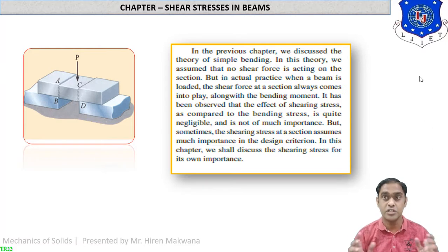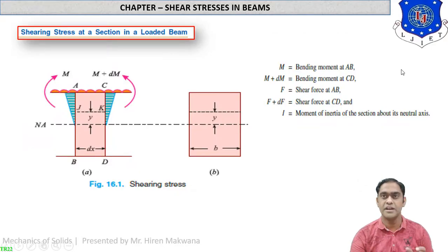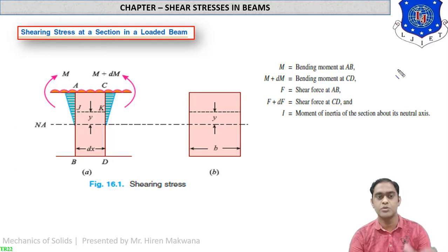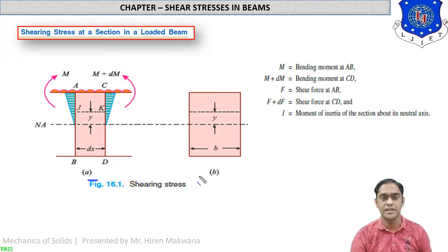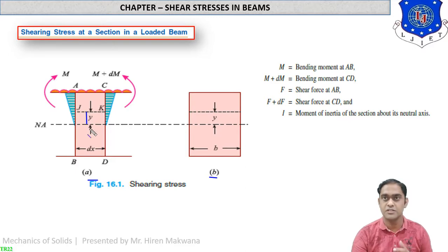Let us see one important theory to derive the equation of shear stress acting on a beam. This is our main and fundamental theory of shearing stress at a section in a loaded beam. You can see two sections — this is the front view and this is the side view in figure b. This is the neutral axis, meaning the centroid axis passing through the CG of the beam. The layer JK is at a vertical distance y from the neutral axis.